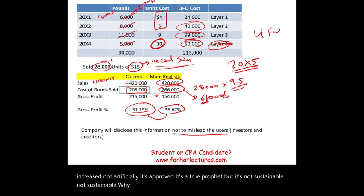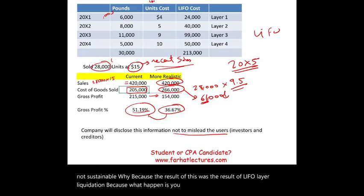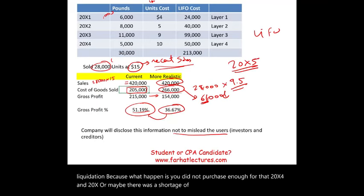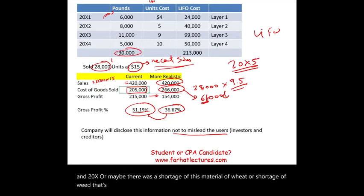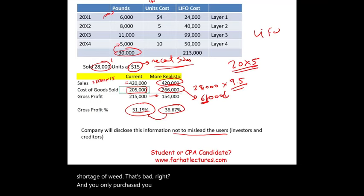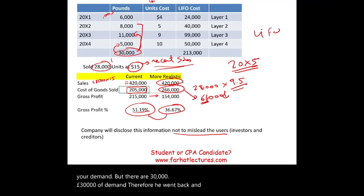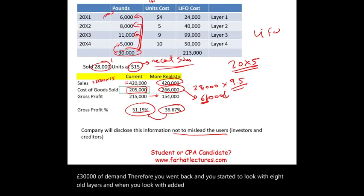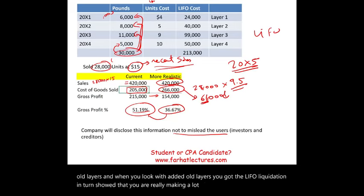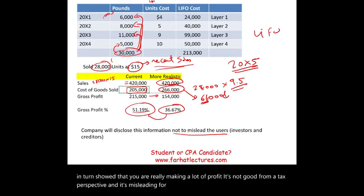When you match recent sales with old cost and profit increases, it's a true profit but it's not sustainable. This resulted from LIFO layer liquidation — in 2004, you did not purchase enough, perhaps because there was a shortage of wheat. You only had 5,000 pounds available against demand for 30,000 pounds, so you liquidated old layers, which inflated profit and raised your tax bill.